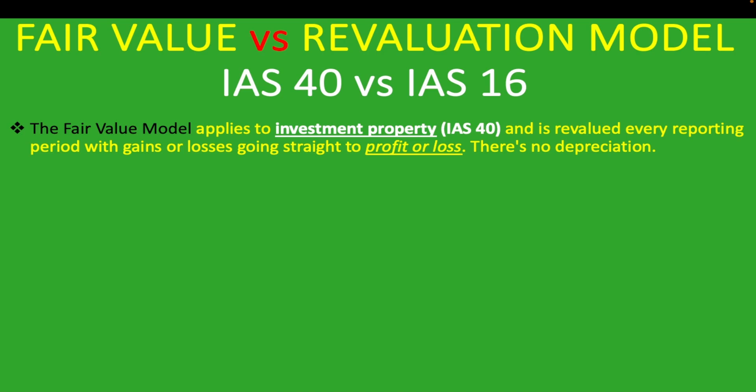Under IAS 40, the fair value model requires you to revalue your classes of assets every reporting period. At the end of every period you determine the fair value of these assets, and the gains or losses go straight to profit or loss. Under the fair value model, gains and losses do not go into other comprehensive income — OCI is not used. Furthermore, there is no depreciation when using the fair value model.